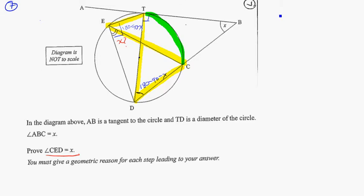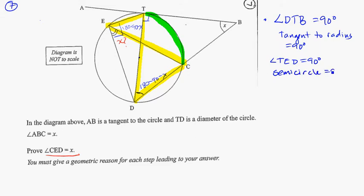So the first thing I want to say is that angle DTB equals 90 degrees. My reason for that is tangent to radius equal 90 degrees. Next thing that I said was that angle TED is equal to 90 degrees, and this is because semicircle equal 90 degrees on edge. So those are the first two things I started with.